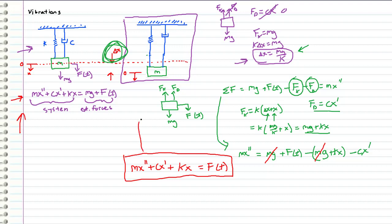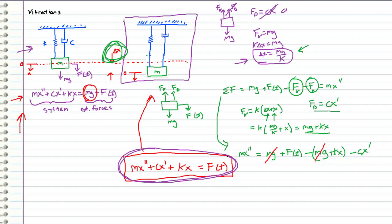When we rearrange, we get: MX'' + CX' + KX = F(t). This is our new system associated with this coordinate system choice. The main difference is that we no longer have the mg term in our equation. We've reduced the complexity of our differential equation with a simple change of coordinate system — from starting at the relaxed length to the equilibrium length. This is a powerful tool in engineering: pick a convenient coordinate system that makes the math easier. In future videos, when we solve this equation, we'll assume the coordinate system starts at this equilibrium position.